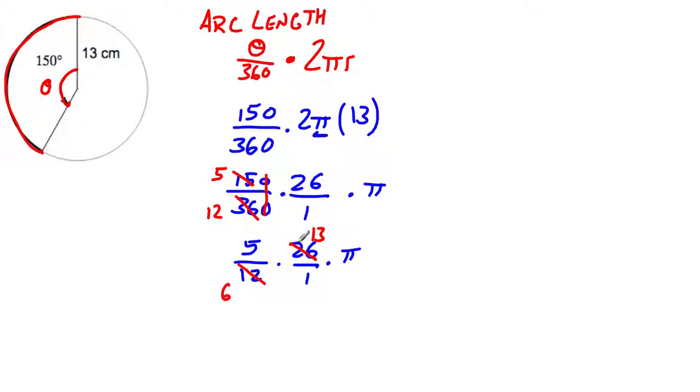So I have now two reduced fractions. And when I multiply these, I can multiply straight across. Numerator times numerator, denominator times denominator. So in my numerator, I have 5 times 13, which is 65. My denominator, I have 6 times 1, which is 6. And times π, which I can put in the numerator.